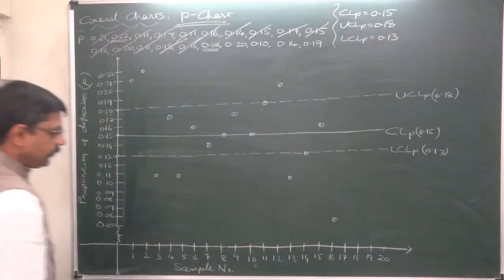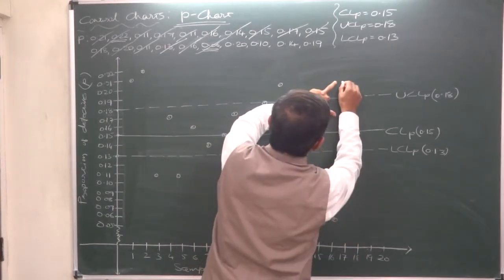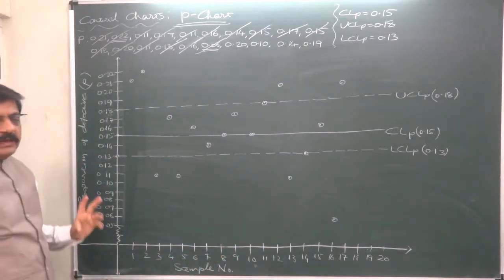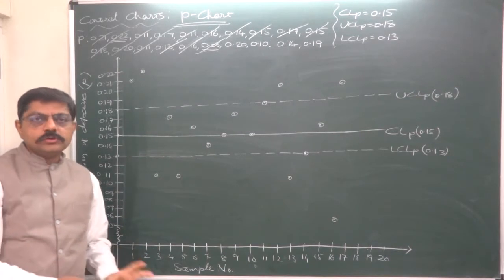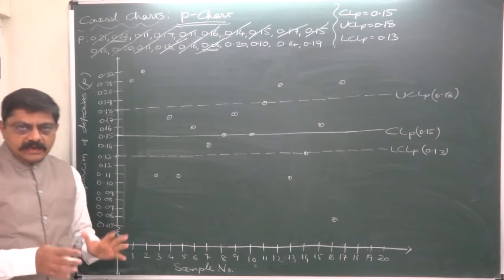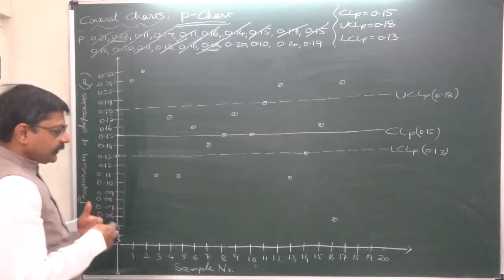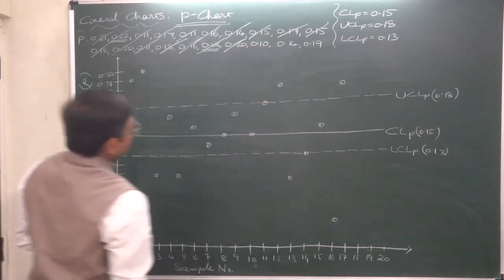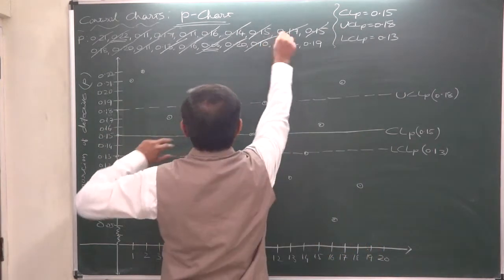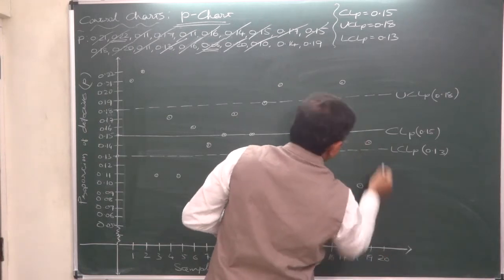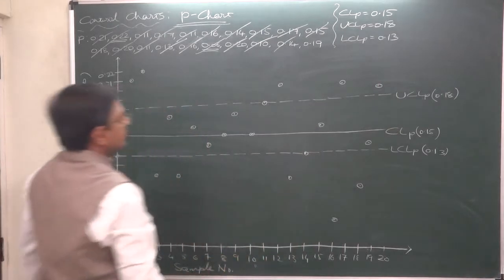Sample 15 is 0.16 — above the central line. It is very easy to draw the chart accurately if you use proper graph paper with dark lines, one-centimeter boxes, and one-millimeter divisions — always use a proper graph sheet. Sample 18 is 0.10. Sample 19 is 0.14. Sample 20 is 0.19 — above the central line.